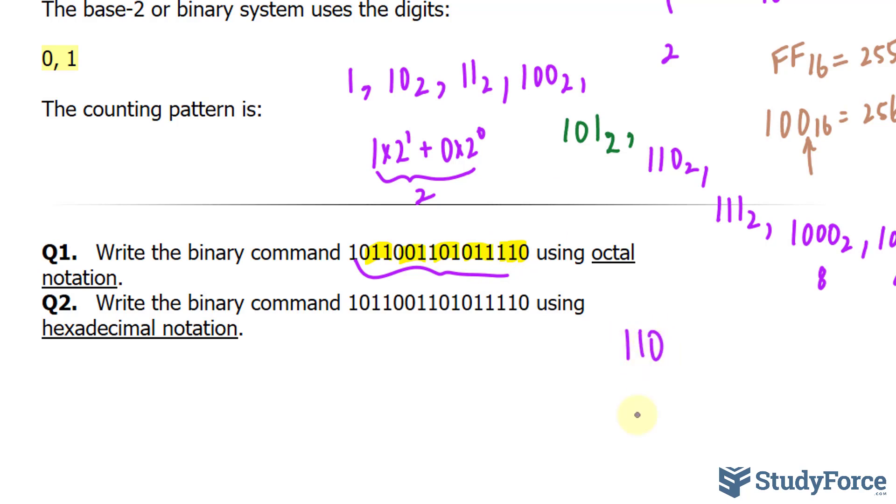So 1, 1, 0. Remember, this is like saying 1 times 2 to the power of 2, plus 1 times 2 to the power of 1, plus 0 times 2 to the power of 0. That's 4, that is 2, and that is 0. So this is equal to 6. Remember, the octal notation goes between 0 and 7. So we don't need to change this into anything other than what it is. So that's 6.